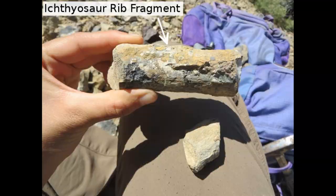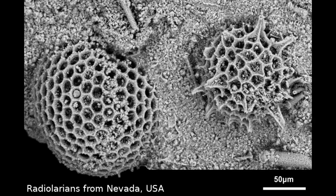Body fossils are the preserved remains of a living organism. They can include bones, teeth, shells, the exoskeletons of insects, and the leaves of plants and trees. Some body fossils, like the trunks of trees and the leg bones from sauropods — long-necked dinosaurs — can be bigger than humans. Other body fossils, like these tiny radiolarians that used to float in the ancient oceans, are so small that we need special microscopes to see them.